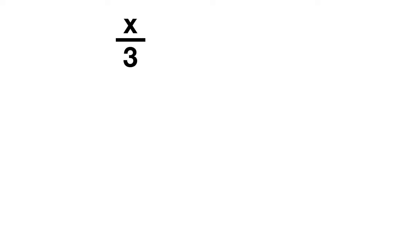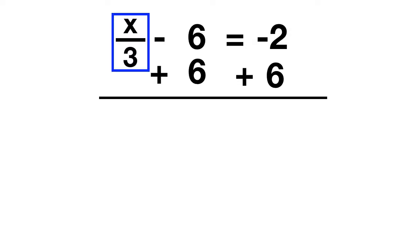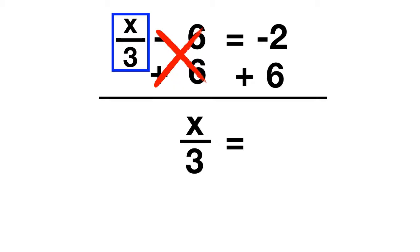Let's look at another problem: x over 3 minus 6 equals negative 2. In this equation, we have an x divided by 3 and a minus 6. Remember to leave the x until the end and focus on addition or subtraction first. We're going to get rid of the minus 6 by adding 6 to both sides. The minus 6 and plus 6 cancel out, leaving just x over 3. On the other side, negative 2 plus 6 gives you 4.